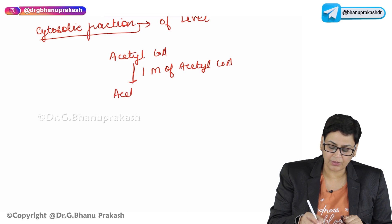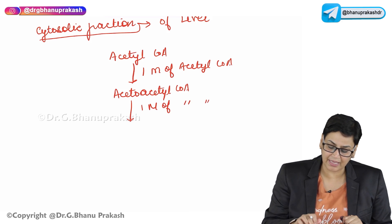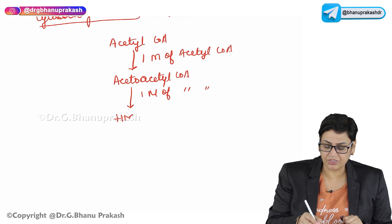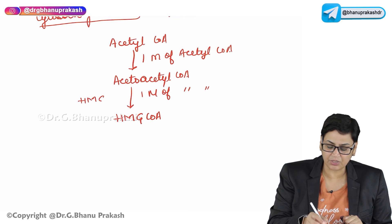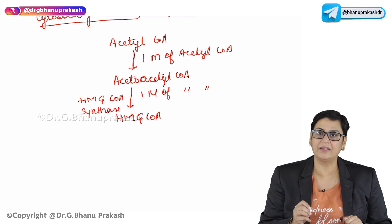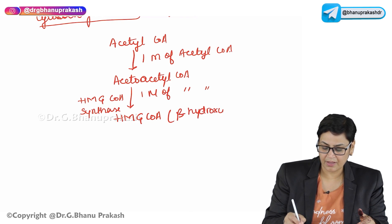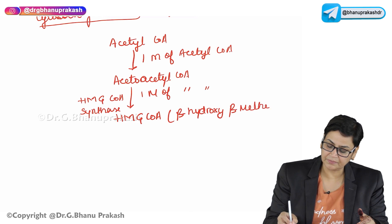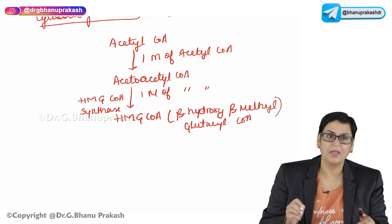One molecule of acetyl coenzyme A combines with another molecule of acetyl coenzyme A, forming acetoacetyl coenzyme A. This acetoacetyl coenzyme A then combines with one more molecule of acetyl coenzyme A to form HMG-CoA. The enzyme here is HMG-CoA synthase, since there is no involvement of ATP. The full form is beta-hydroxy-beta-methyl-glutaryl coenzyme A.